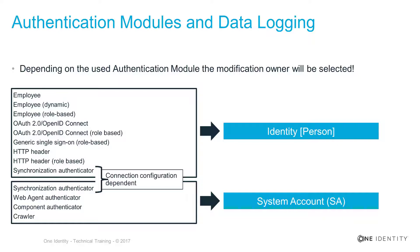As you can see, the system authenticators can also act as a system account. This depends on what type of synchronization connection was built during the configuration of the synchronization project. Typically they will act as a person-object, but if they cannot act as a person-object, they will act as a system account. All other authenticators — typically those we cannot use to log in to the front-end — use something called the system account, which is always shown as an abbreviation with S and A.